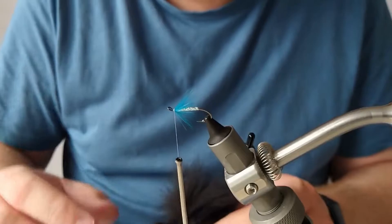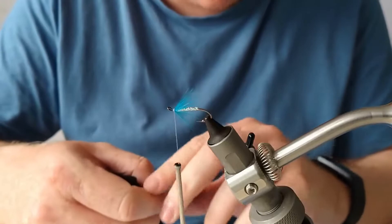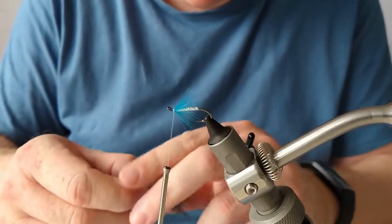Now for the wing, I am going to use, the original was I think it was mallard or teal, but this time I am going to use some black fox. This is fox dyed black.